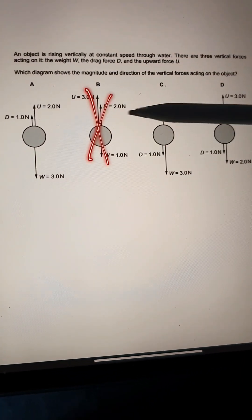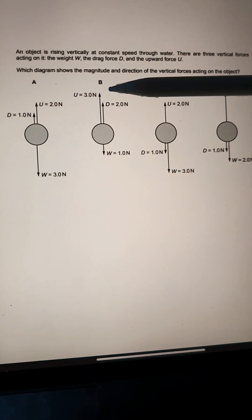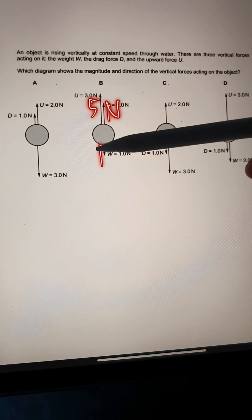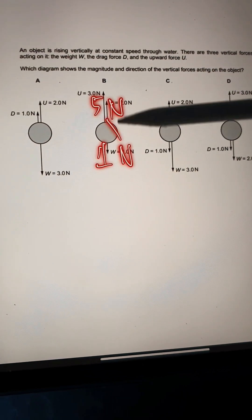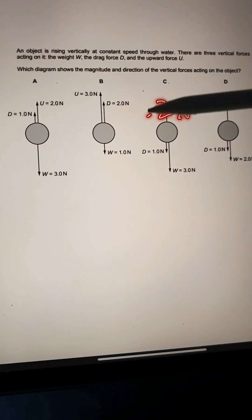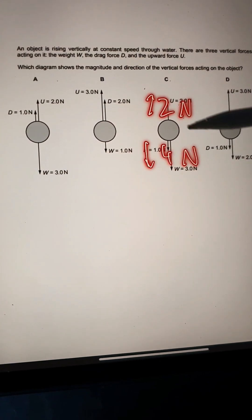In this case, we can rule out B and C because the upward does not equal the downward. This is 5N and 1N downward, so this is not equal. And 2N upward, 4N downward is also not equal.